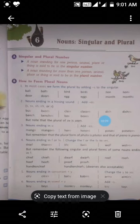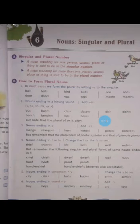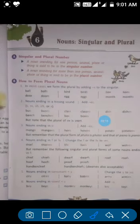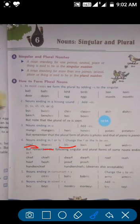Rule number four is nouns ending in F or FE. If a noun ends in F or FE, then what do we do? We change that F to VES. For example, thief becomes thieves. We change the F to VES. Similarly, if there is FE, we remove F and FE and in their place write VES.